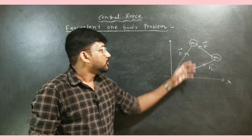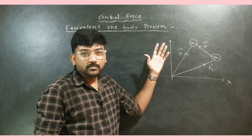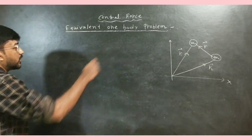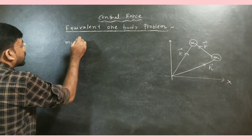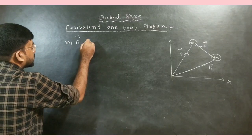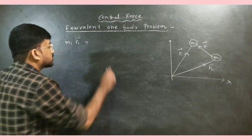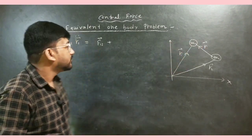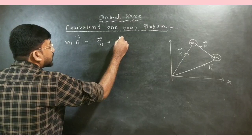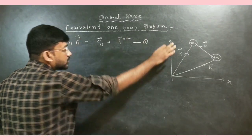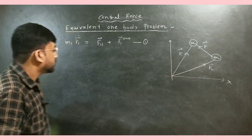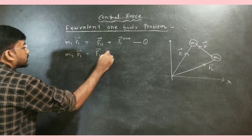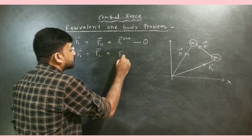Now we have to make an equivalent of this two-body system. First, let me write down the equations of motion for masses M1 and M2 using Newton's second law. For M1, the equation of motion is M1 R1-double-dot equals the force on M1 due to M2, that is F12, plus any external force F1-external. Similarly for M2, we have M2 R2-double-dot equals F21 plus F2-external.